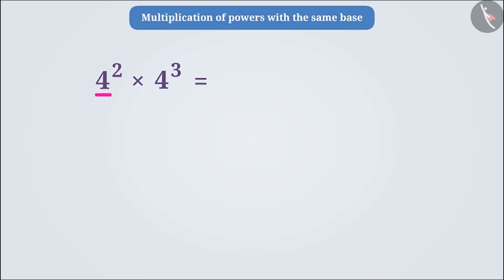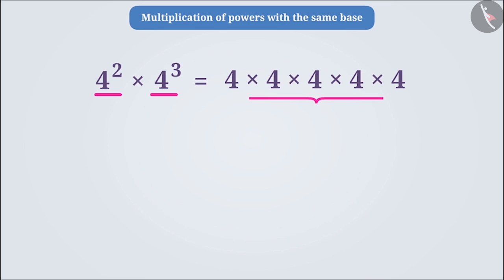To find the value of 4 squared, we will multiply 4 by itself two times. Similarly, to find the value of 4 cubed, we will multiply 4 by itself three times. Now you can see that 4 is multiplied by itself for a total of 2 plus 3, that is five times. Therefore, we can represent it as 4 to the power of 5.